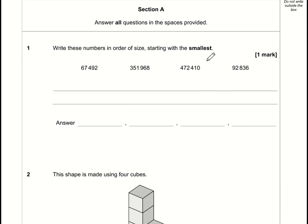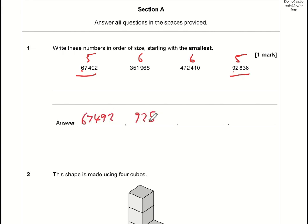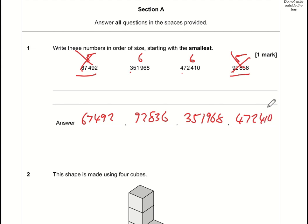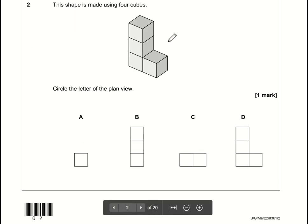Write the numbers in size order starting with the smallest. This number has five digits, this is six digits, this is six digits, this is five digits. The smallest has to be one of the two five-digit numbers. This one begins with six, this one begins with nine, and since six is less than nine, the smallest number is 67492. Then 92836. Comparing the two six-digit numbers: this one begins with three, this one begins with four — three is less than four — so 351968, and the biggest is 472410.